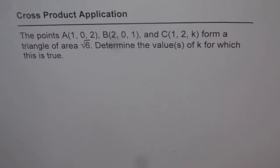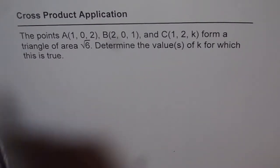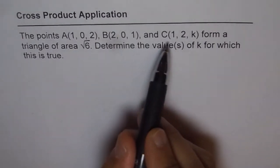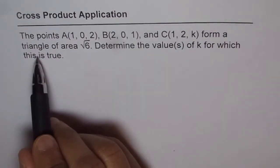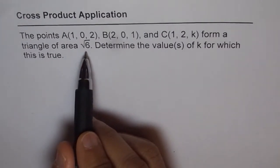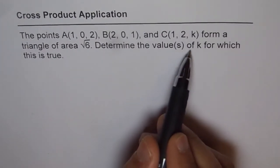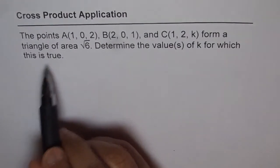Here is an application of cross product. We are trying to find the area of a triangle. The question is: the points A(1, 0, 2), B(2, 0, 1), and C(1, 2, k) form a triangle of area √6. Determine the values of k for which this is true.